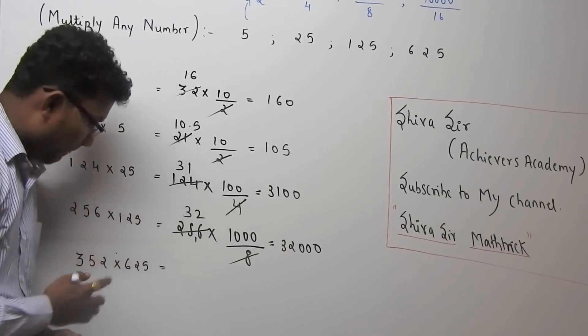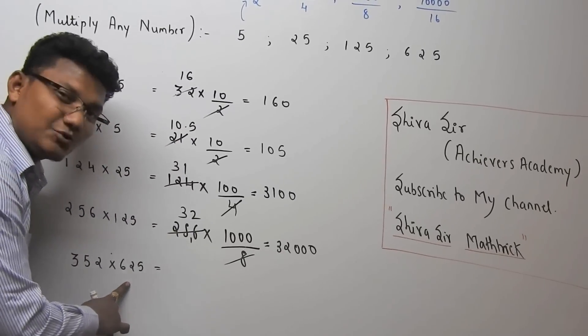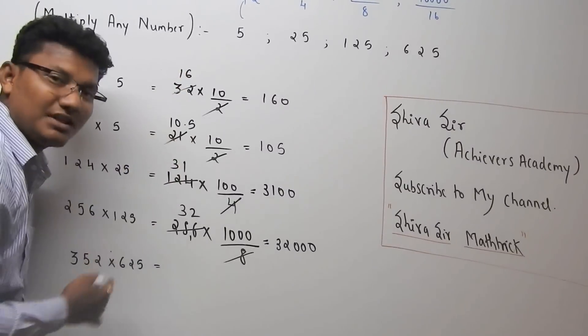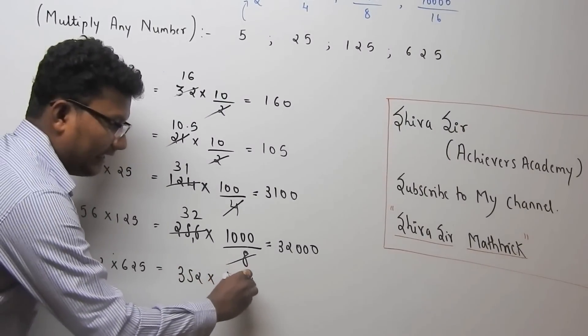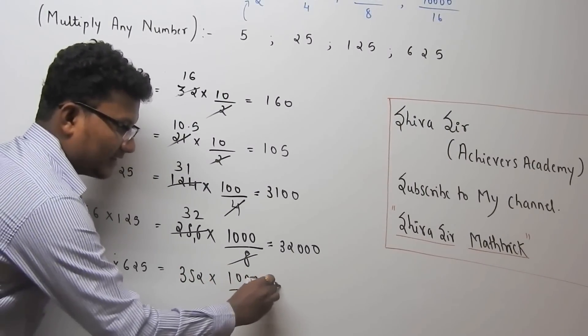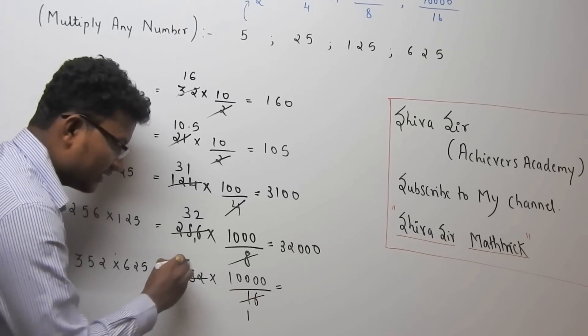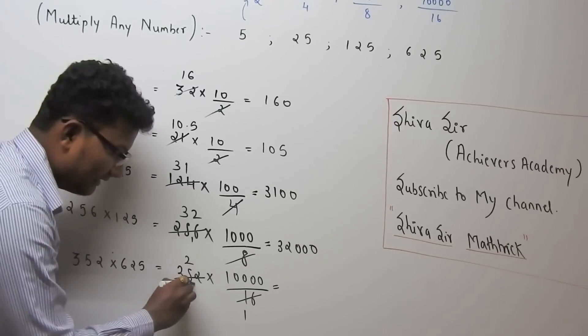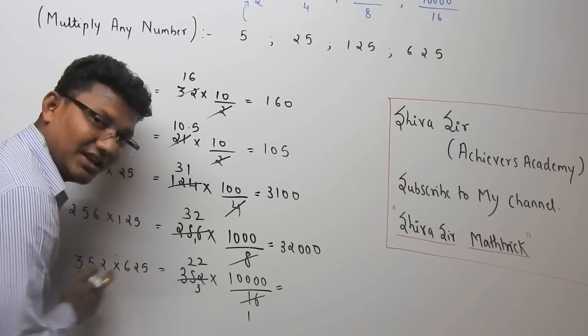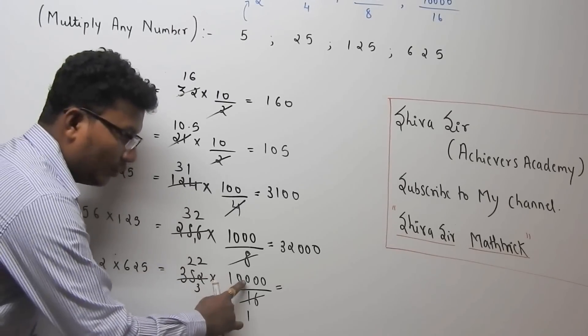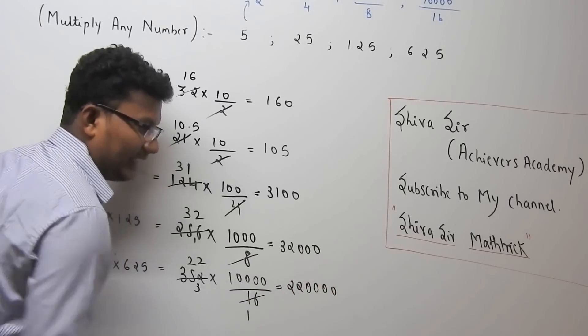Now focus on the last example: 352 into 625. This 625 I can write as 10000 by 16. So 352 into 10000 by 16. Cancel out. 16 into 352 is 22. So 22 into 10000, you will get 2 lakh 20,000.